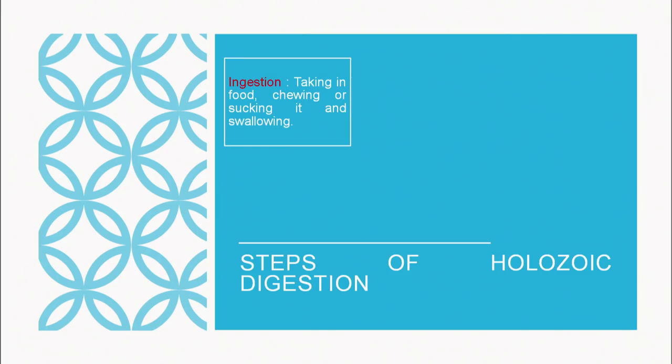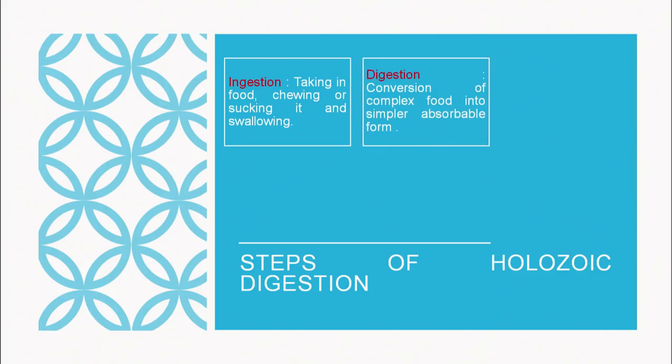Now let us move on to digestion and the steps of holozoic digestion. There are five major steps. First is ingestion — taking in food, chewing, sucking or swallowing all constitute ingestion. Then comes digestion — once we take in the food, it is converted into smaller or simpler absorbable form.